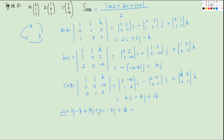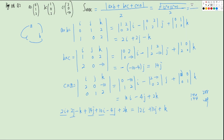The magnitude is the square root of 12² plus 12² plus 1², which is the square root of 144 plus 144 plus 1, equals the square root of 289, which is 17. So the area of triangle ABC is 17 over 2.